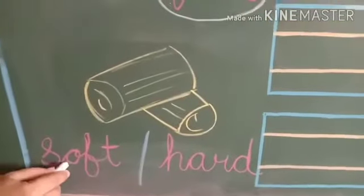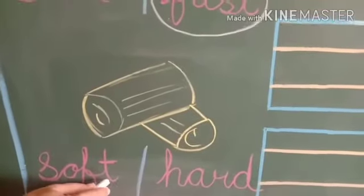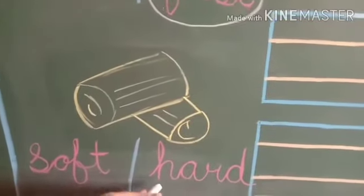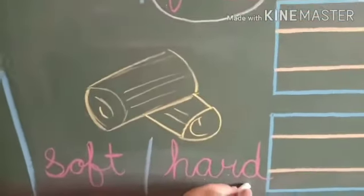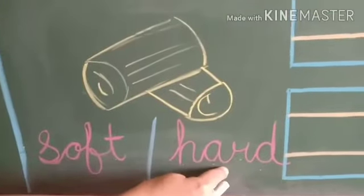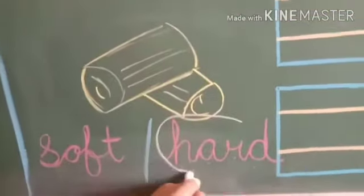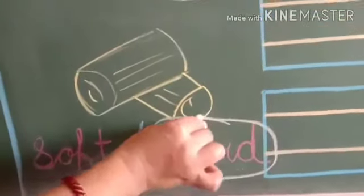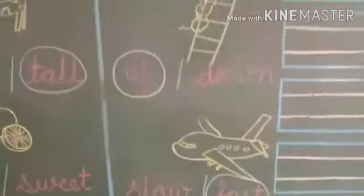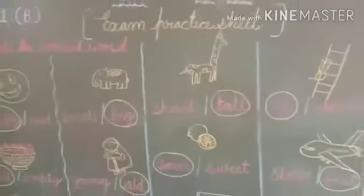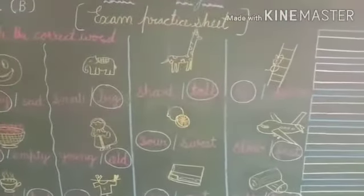Log. S-O-F-T, soft, soft means naram. And H-A-R-D, hard, hard means kadak. Log kaisa hota hai? Lakdi kaisa hota hai? Hard. So circle on H-A-R-D, hard. Okay students, we understand these all are opposite words.